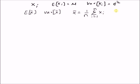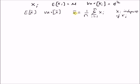X_i is independent of X_j when i is not equal to j. Given these conditions, we want to derive the mean and variance of the sample mean.